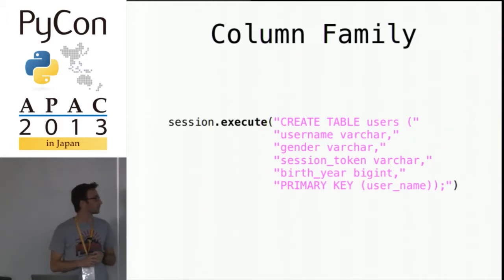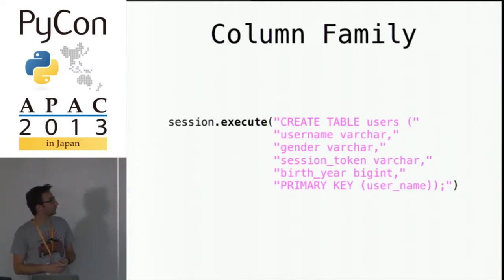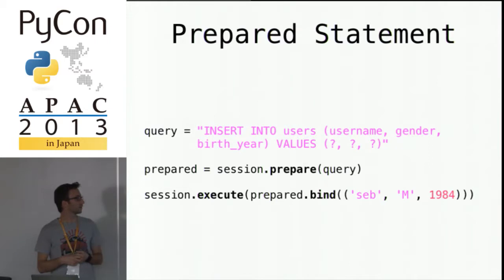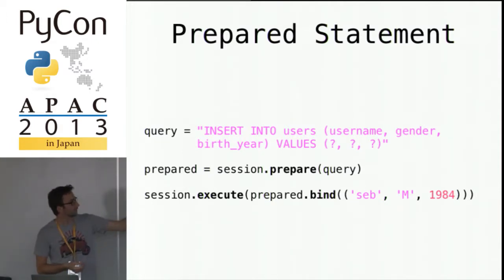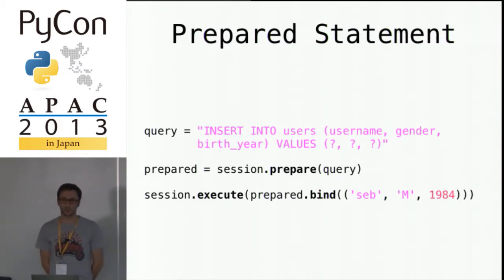Then you create a table — 'column family' is a synonym but to keep it more SQL-like, let's use 'table.' Now let's talk about the cool features the Cassandra driver brings — for example, prepared statements. You don't want to write strings all the time; you want to wrap them into functions. The Cassandra driver provides prepared statements: you put a question mark instead of the values you want to bind, and the driver prepares the function for you. You can imagine that with prepared statements, you could easily build a nice ORM on top of the Python driver.